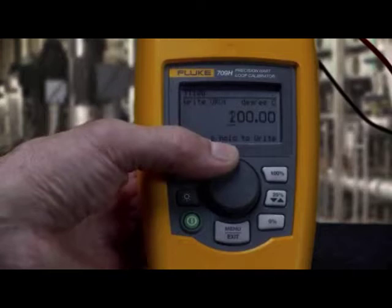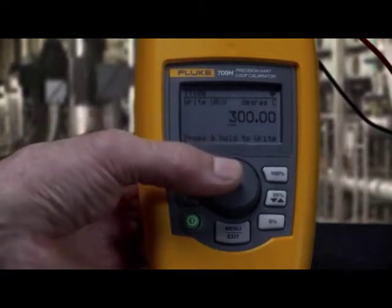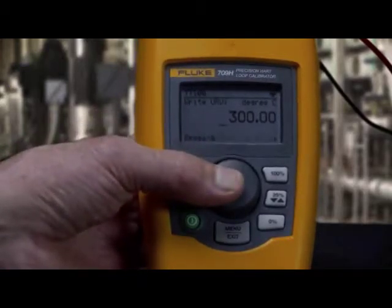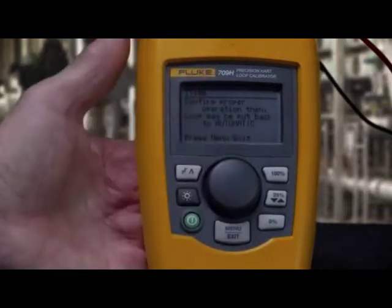Pressing the thumb wheel changes a decade to update. Rotate the knob to the correct value to change. Press and hold the knob to write to the HART device.